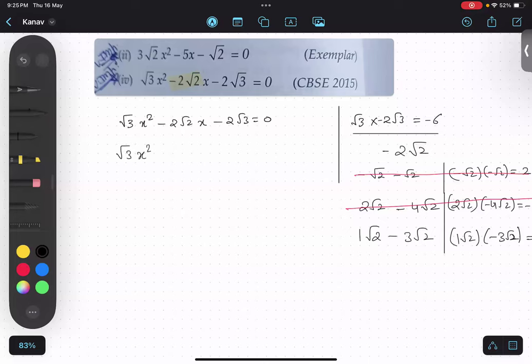√3x² and plus 1√2x minus 3√2x minus 2√3 equals to 0. Is this thing clear? Yes. This is the split I did. This was the most important thing over here.